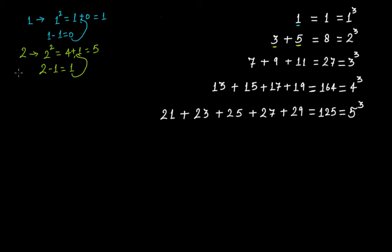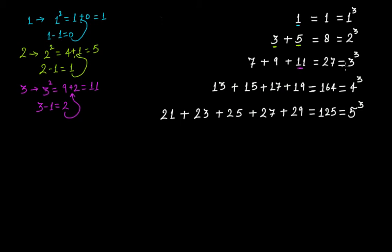For three cubed: three squared is nine. Three minus one is two. Add two to nine — you get eleven. So 11 is the largest odd number. Since we need three consecutive odd numbers, the odd number before 11 is nine, and before nine is seven. So the sum is seven plus nine plus eleven.